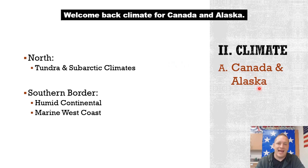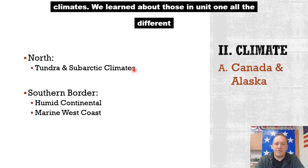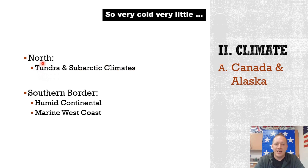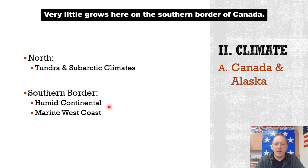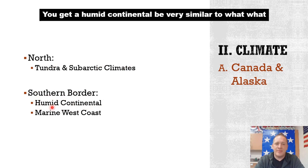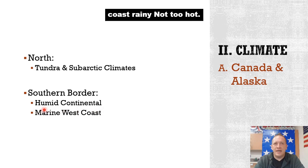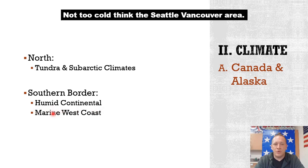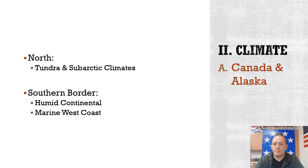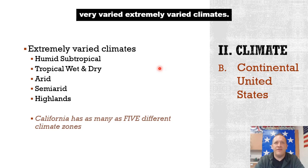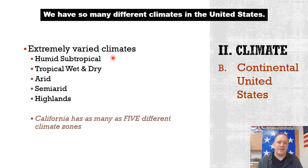Climate for Canada and Alaska: in the northern part is tundra and subarctic climates — very cold, very little grows there. On the southern border of Canada you get a humid continental climate, very similar to what the climate is in the north-central United States. And then a marine west coast climate — rainy, not too hot, not too cold. Think the Seattle and Vancouver area. The climate in the United States is extremely varied.